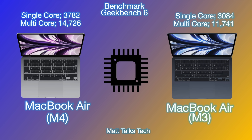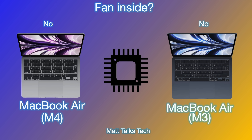In terms of CPU benchmarks, the MacBook Air M4 has a single-core score of 3,782 compared to the M3 MacBook Air at 3,084 — a clear performance gain. For multi-core performance, the M4 scores around 14,726 (some users report up to 15,000), whereas the M3 scores around 11,741. It's not a huge gain in multi-core, but single-core improvement is definitely noticeable.